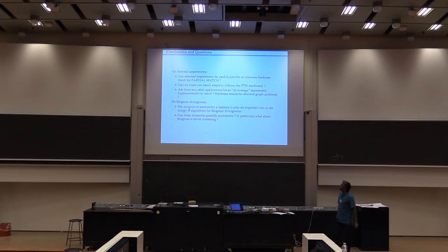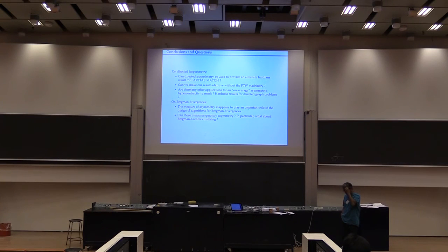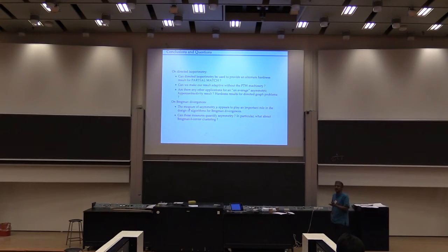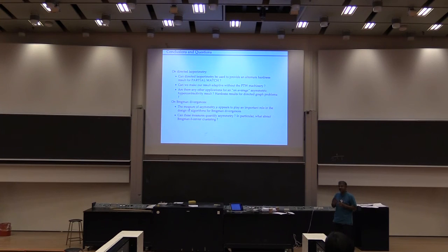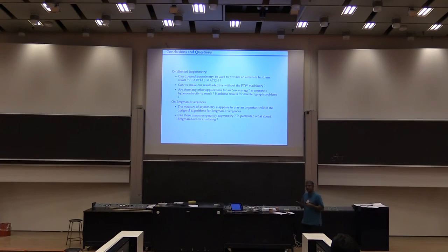I'll stop here now. There are a couple of different open questions. One is: if you don't care about directed isoperimetry as a tool but only the lower bound result, Amir and I have been talking about how directed isoperimetry could also give a different proof of a lower bound for partial match itself — which would be kind of interesting. Also, we'd like to make our result adaptive — that's an annoying limitation we'd like to fix.